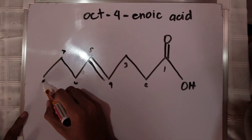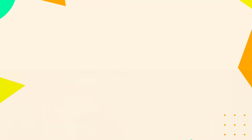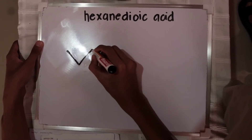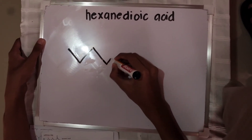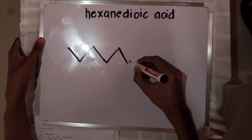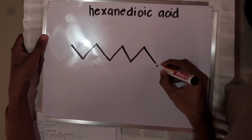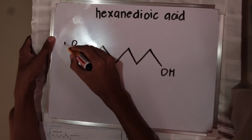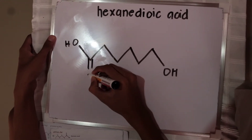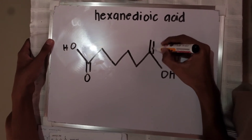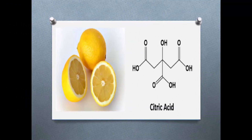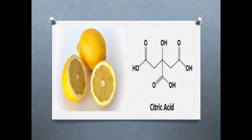And there we have it, the oct-4-enoic acid. Next, we have hexanedioic acid. From the name, we can identify it has 2 COOH groups from the prefix di and a 6-carbon parent chain from the name hex. We draw the parent chain which is 6 carbons and draw the COOH group to both ends of the structure since it has 2 carboxylic acids.